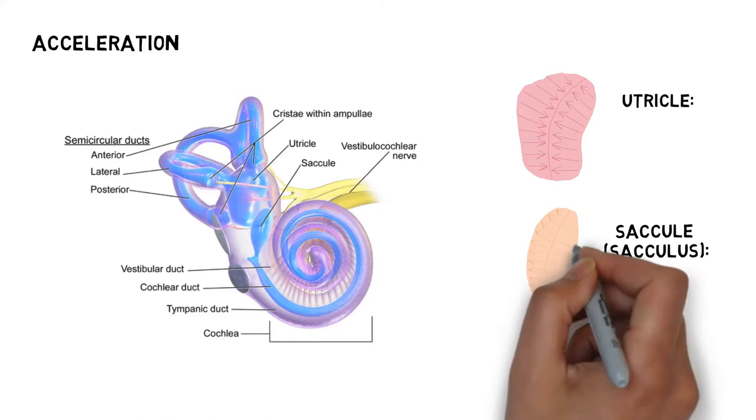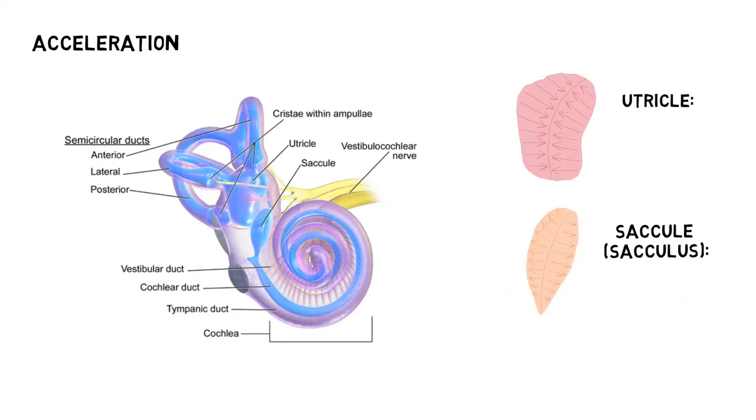These two organs work to determine linear acceleration and head tilt, the utricle in a horizontal plane, and the sacculus in the vertical plane.